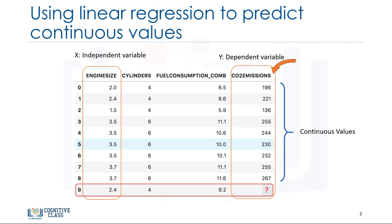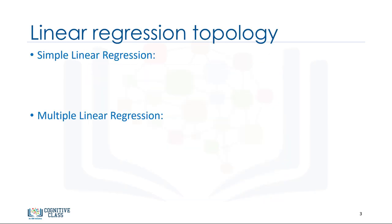The key point in linear regression is that our dependent value should be continuous and cannot be a discrete value. However, the independent variables can be measured on either a categorical or a continuous measurement scale. There are two types of linear regression models.